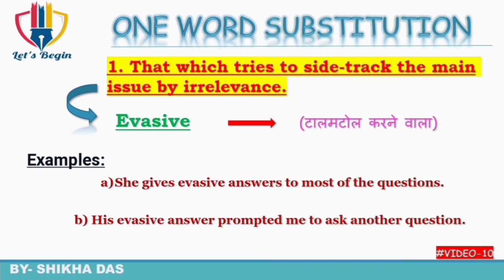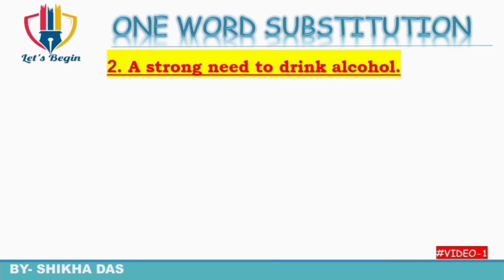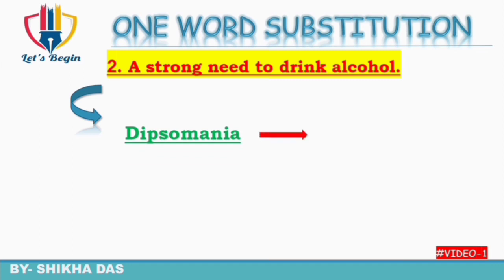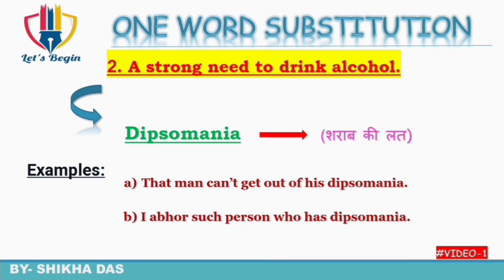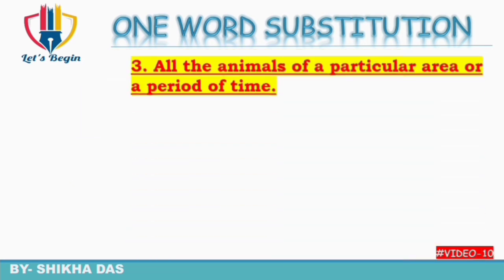Second question: a strong need to drink alcohol — jisko alcohol ki prati bahut hi zyada attraction ho, jo isko chhod na pata ho. Isko kaha jata hai 'dipsomania'. Dipsomania ko Hindi mein kehte hain 'sharaab ki lath'. Example: 'That man can't get out of his dipsomania.' 'I abhor such a person who has dipsomania.' Abhor ka meaning hota hai hate karna.